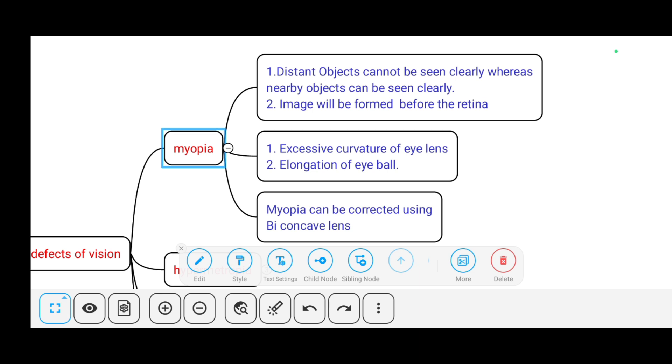First, what is myopia? For a person suffering from myopia, distant objects cannot be seen clearly whereas nearby objects can be seen clearly, because the image will be formed before the retina.